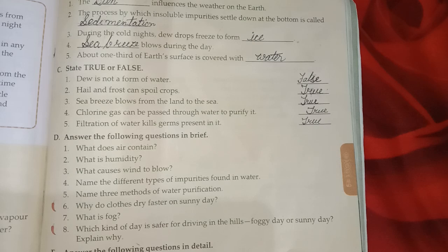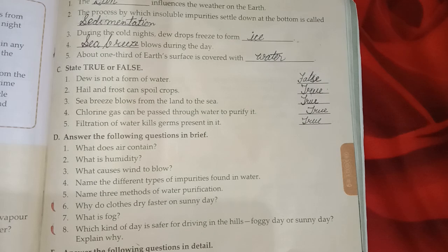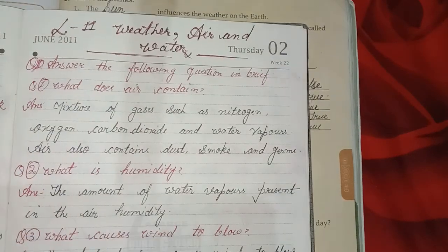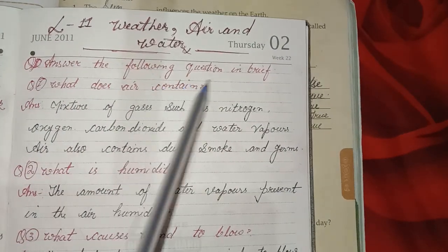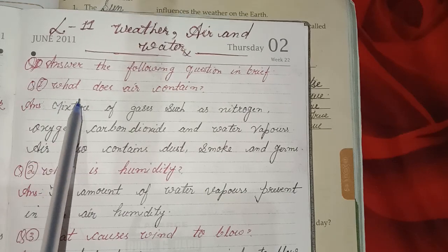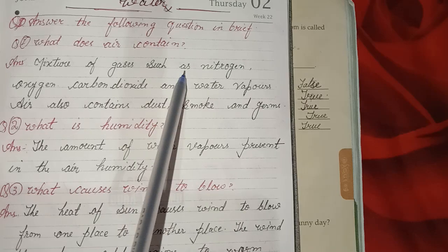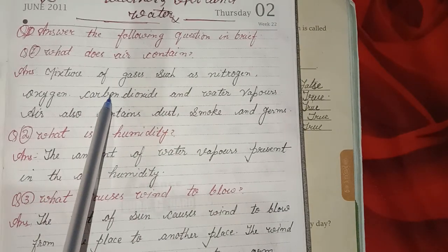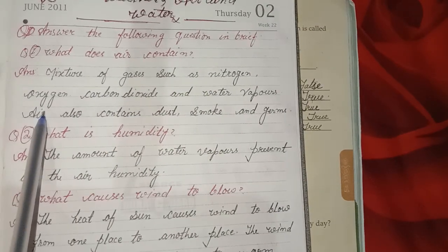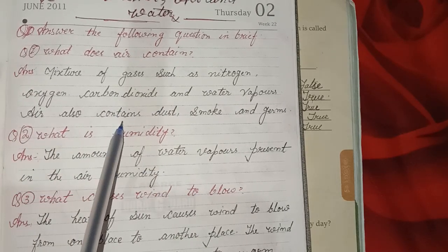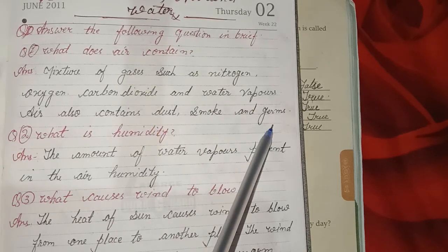Okay student, I have done some questions in the book. After that, I will solve some more questions. First question: What does air contain? Answer: Air is a mixture of gases such as nitrogen, oxygen, carbon dioxide and water vapors. Air also contains dust, smoke and germs.